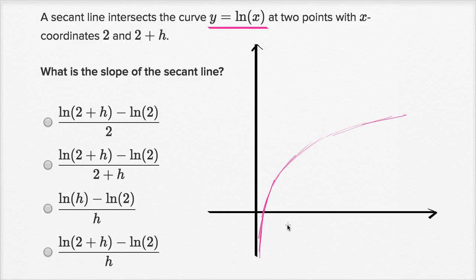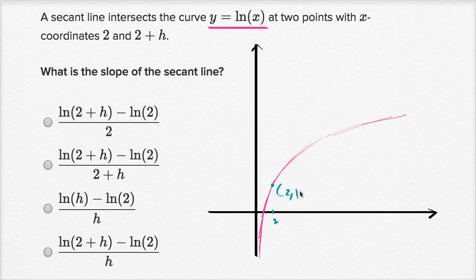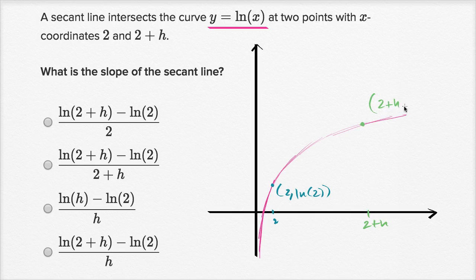When we have the point two comma natural log of two — let's say this is two on the x-axis — then this right over here is the natural log of two, so that's the point (2, ln 2). And then two plus h is two plus something further along, and that point on the graph is going to be (2+h, ln(2+h)). The exercise we just did is finding the slope of the line that connects these two points, which looks something like that.